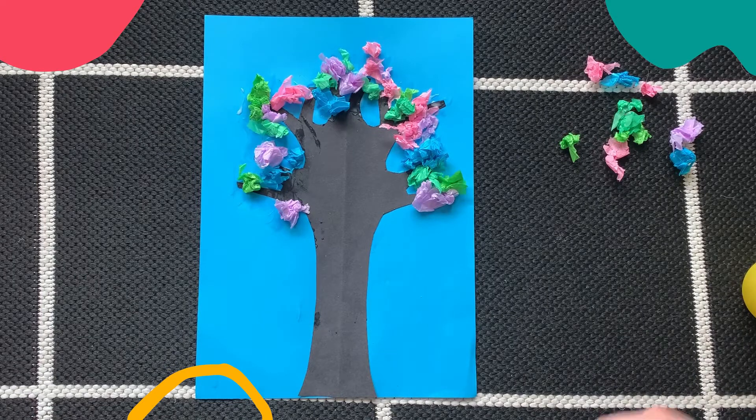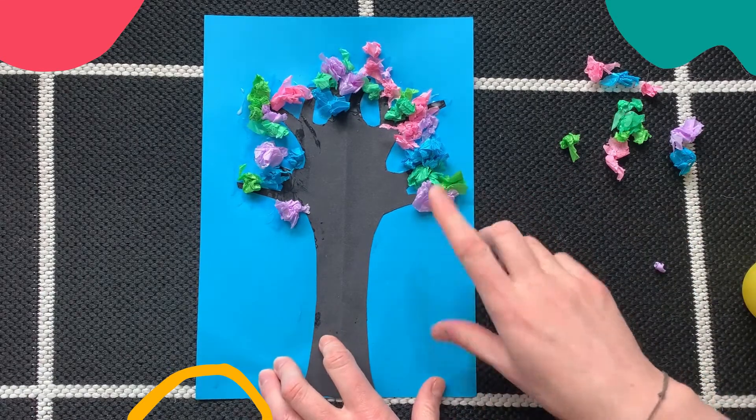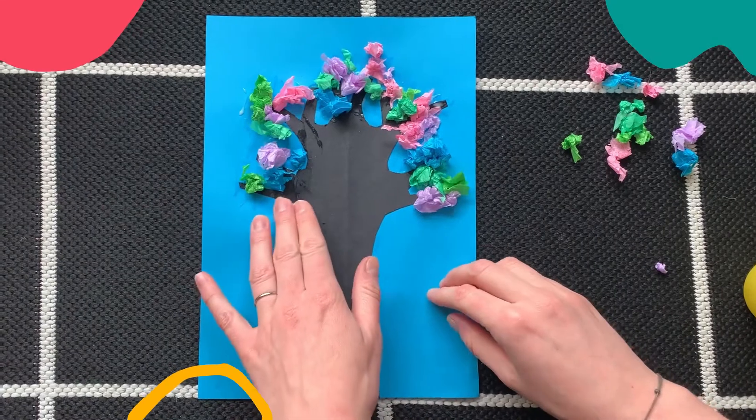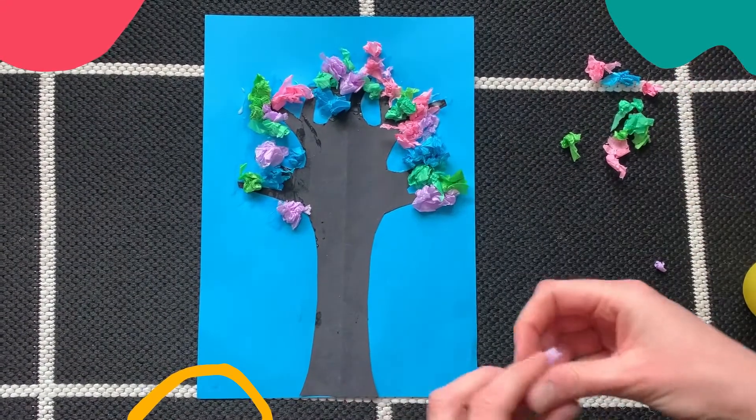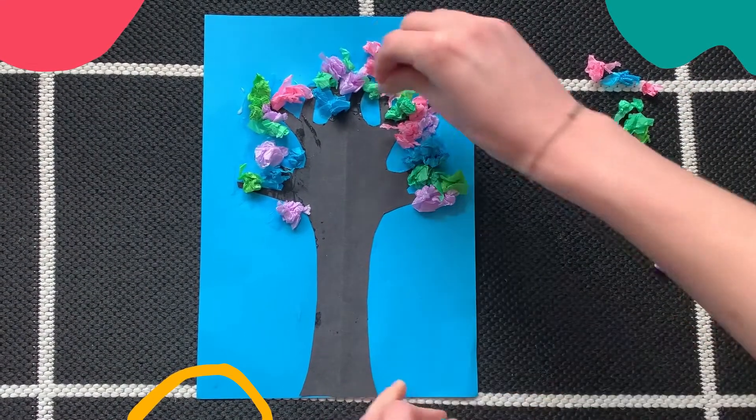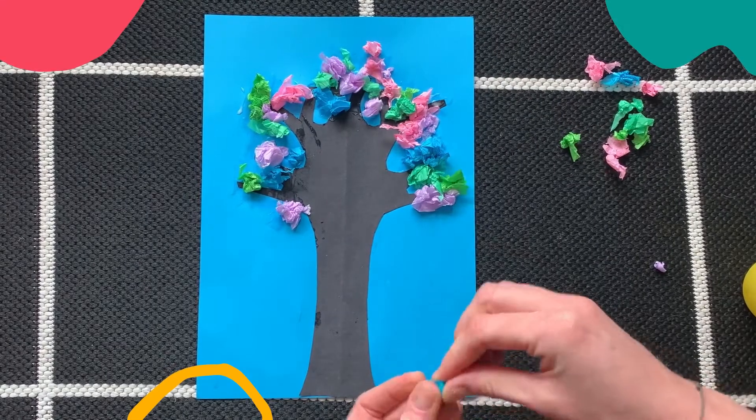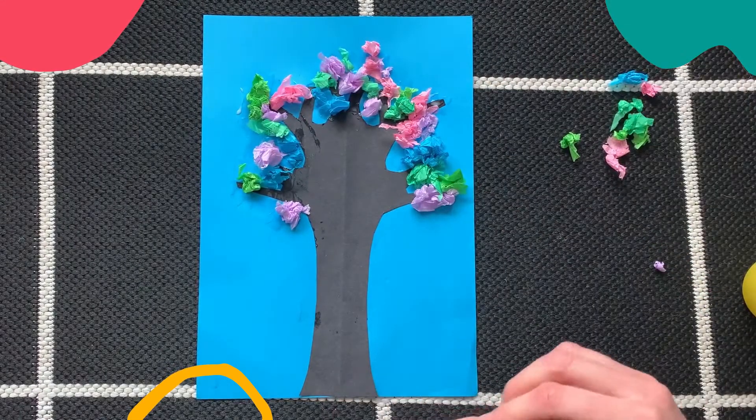So once you put your glue all around the edges, it's time to start adding your tissue paper. As you can see, I've already added lots to mine, so the aim is to fill in all the gaps around the branches and you can get really creative with this.